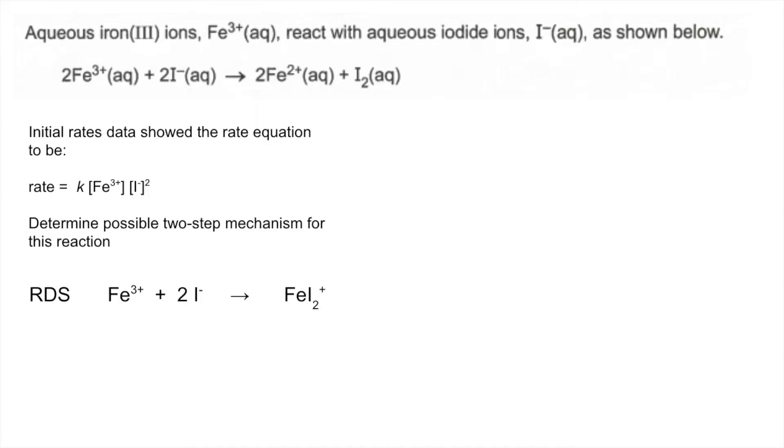You can see we've got the same number of atoms on each side of the equation and also the charges are the same on each side. We've got one plus overall on the left and one plus overall on the right.